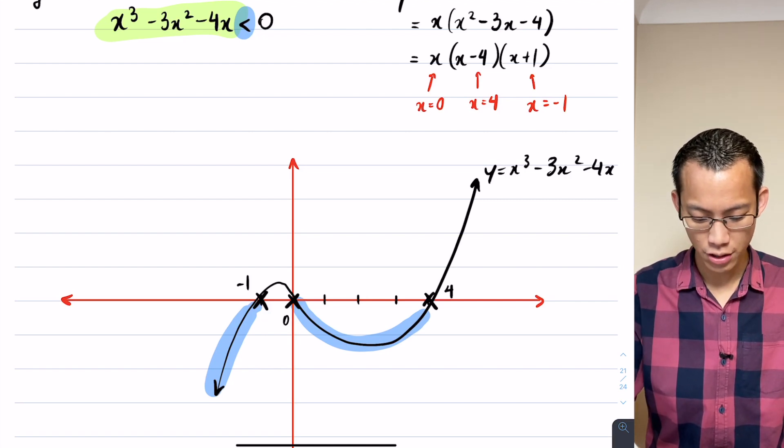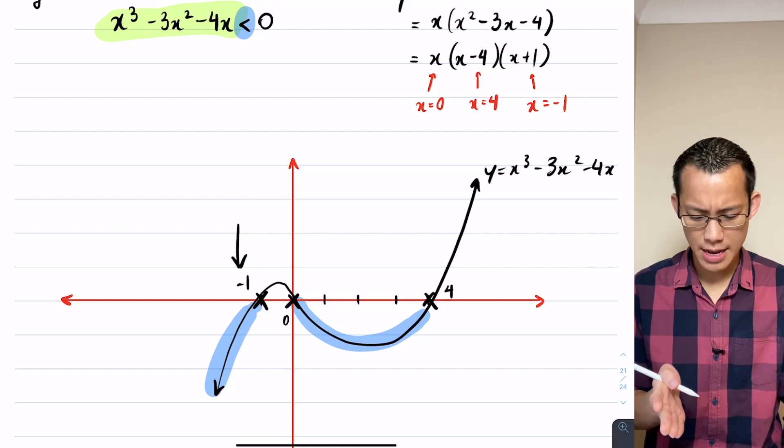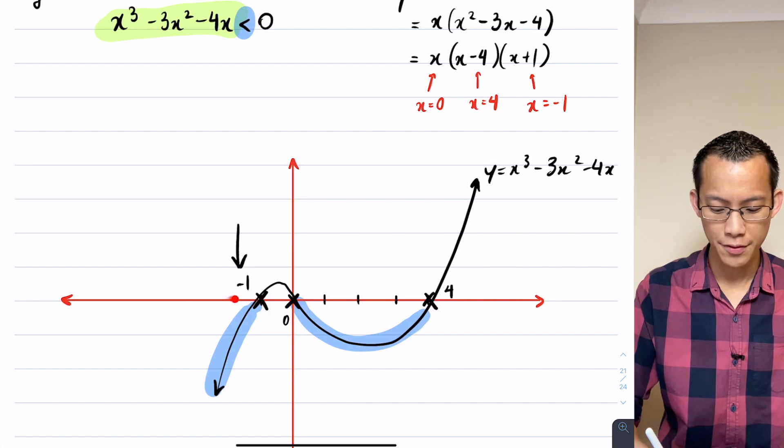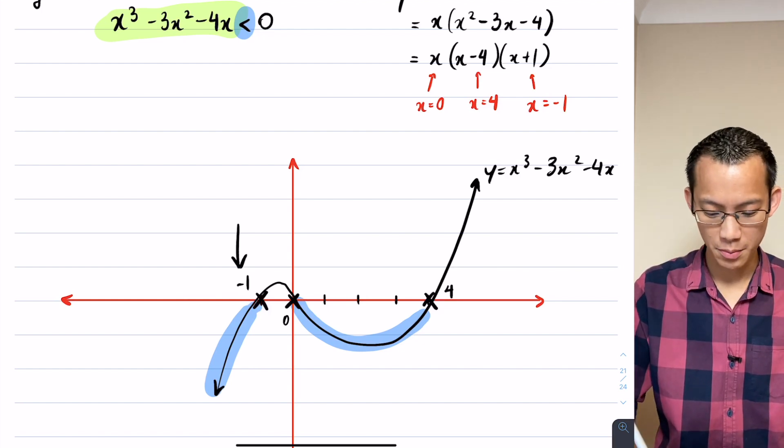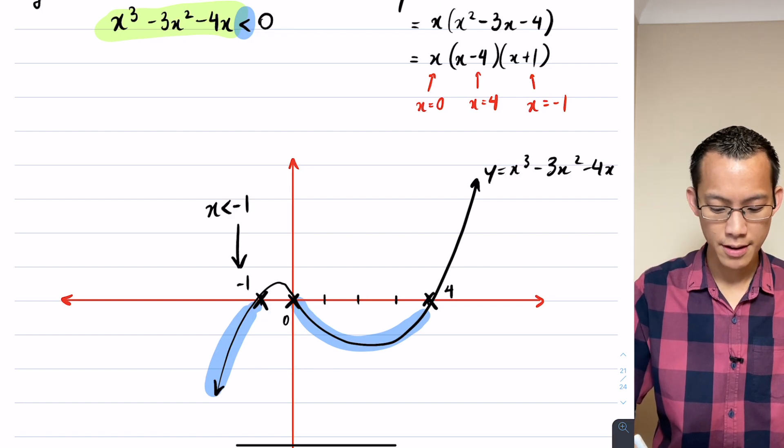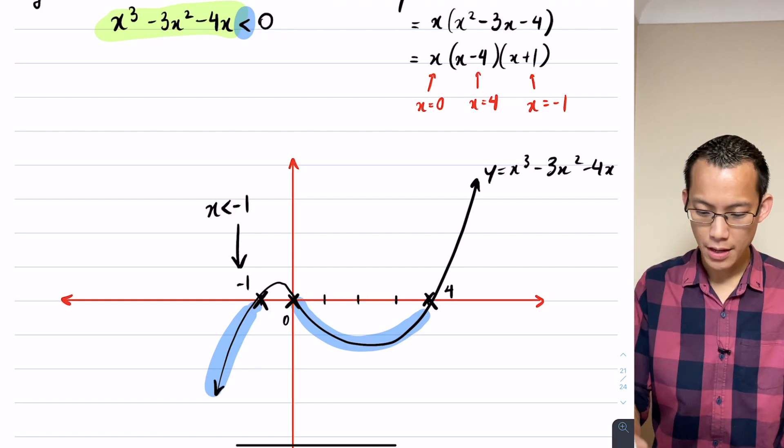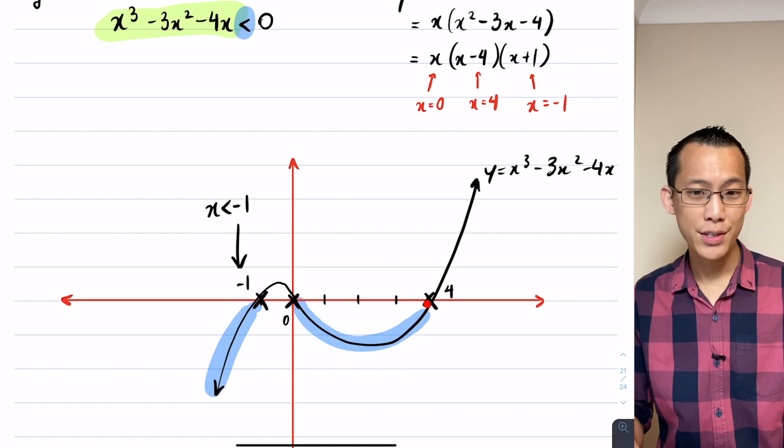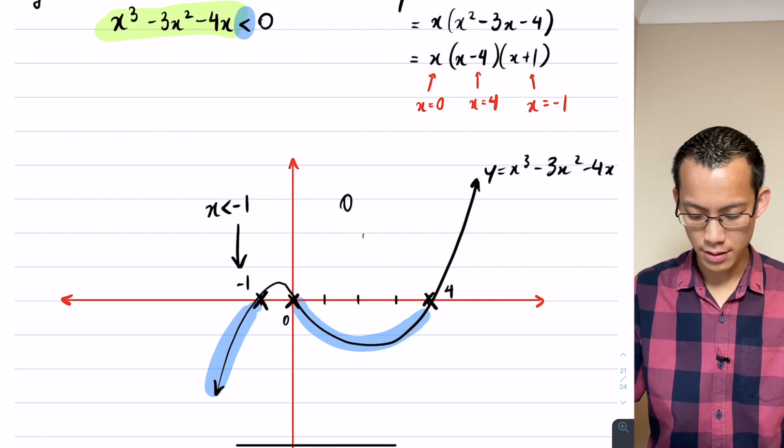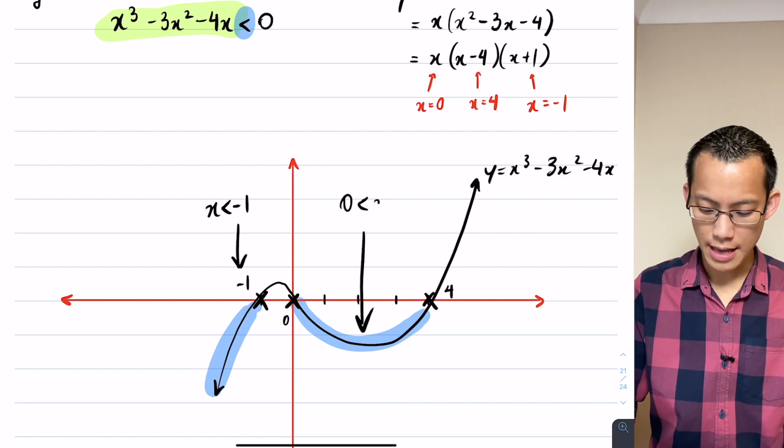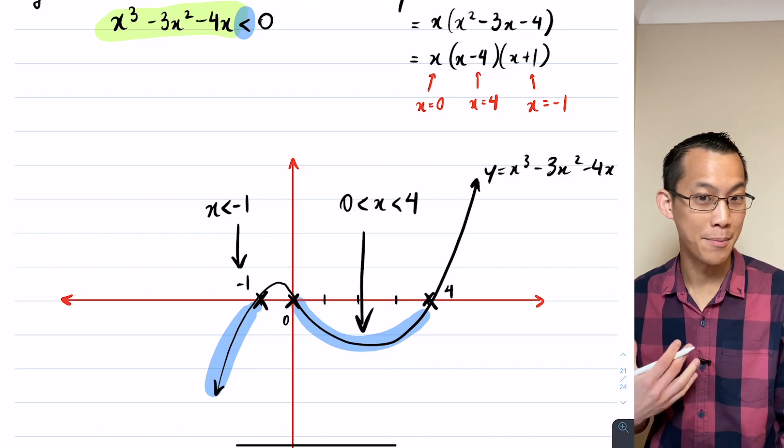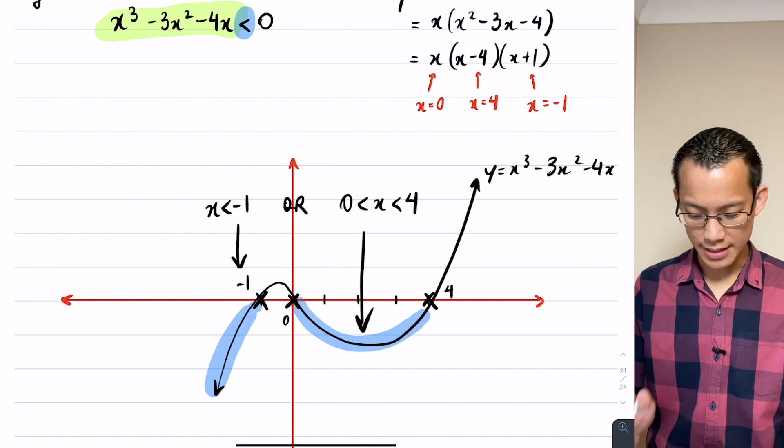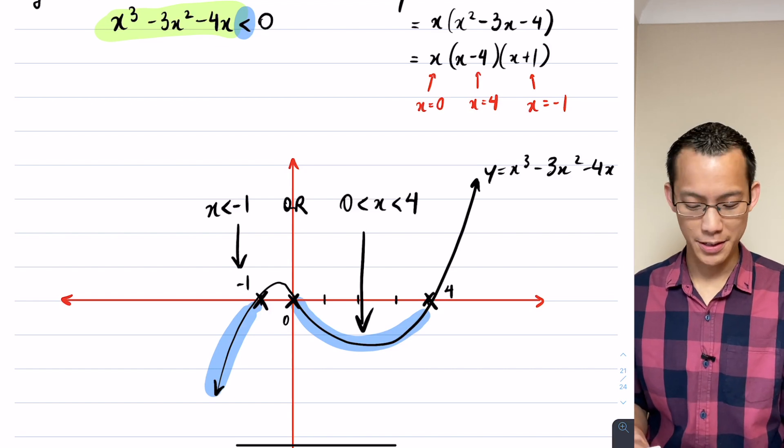So all I need now are the x values that give me those blue sections of the graph. So let's have a look at this section over here on the left. The boundary there is negative 1. That's the spot over there where I stop, and I want everything to the left of that, everything to the left of negative 1. So I'm going to go ahead and write that as x is less than negative 1. There's the first part. And then when I have a look at this section in here, it starts at 0, and then it goes all the way over to 4. So I would say 0, this is this section down here, is less than x is less than 4. And I'm done. That's it.